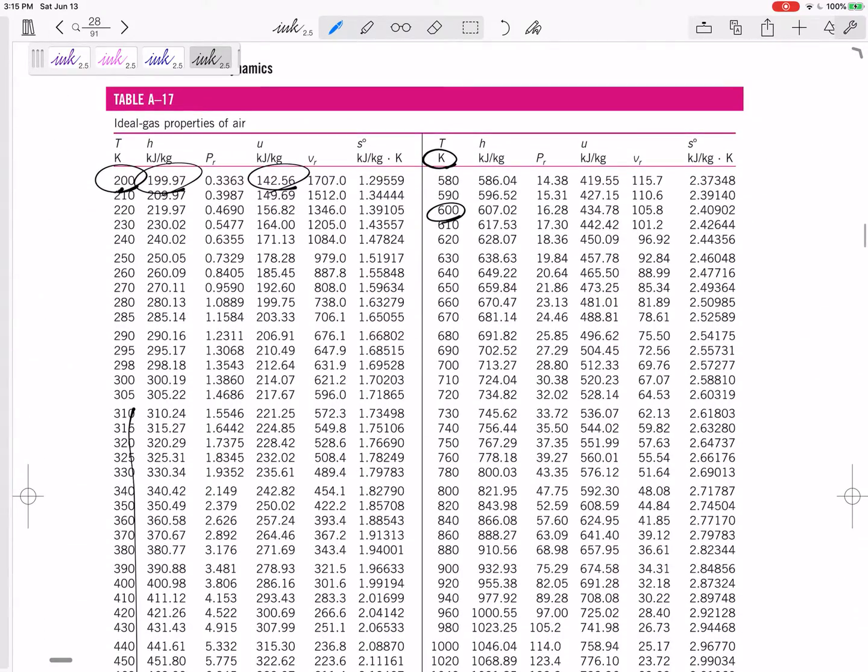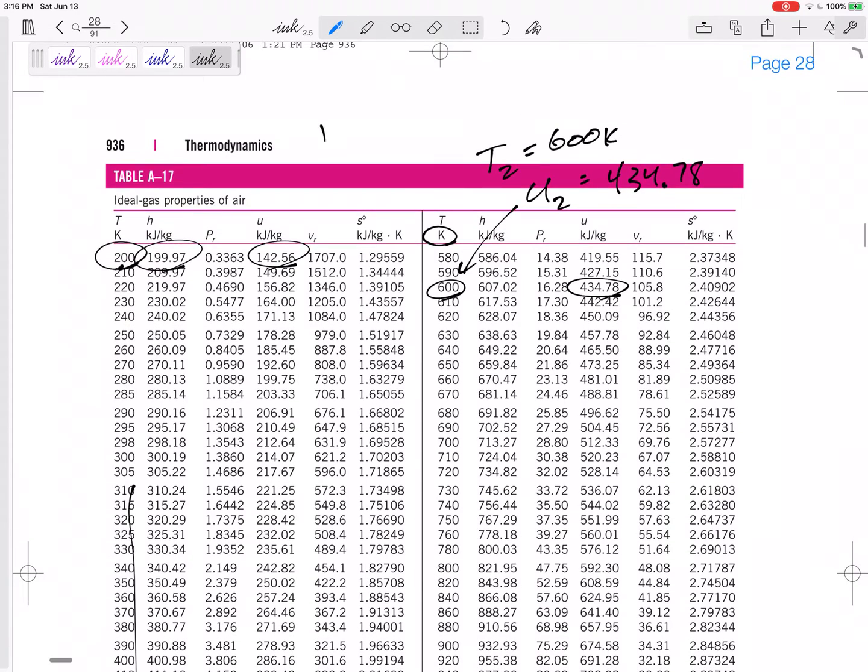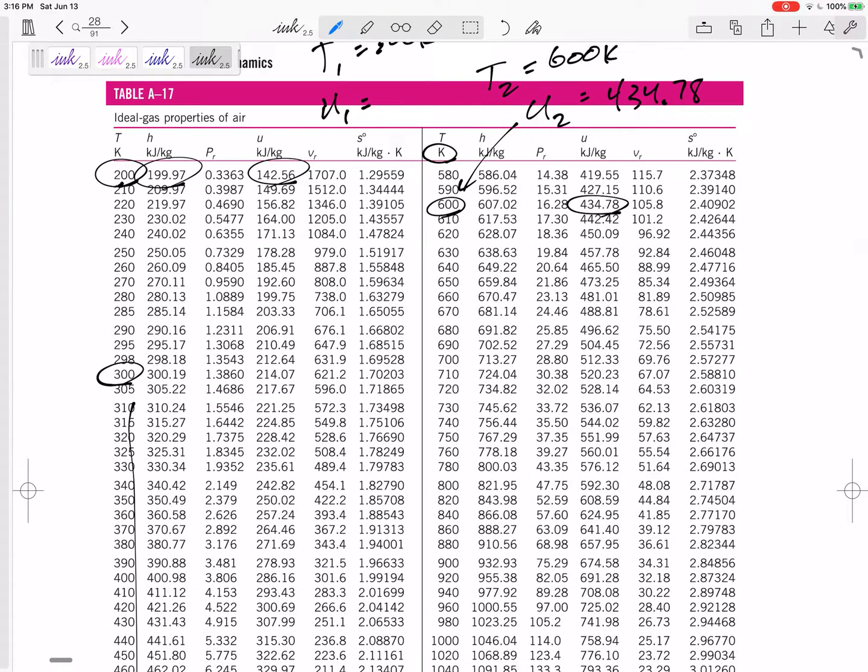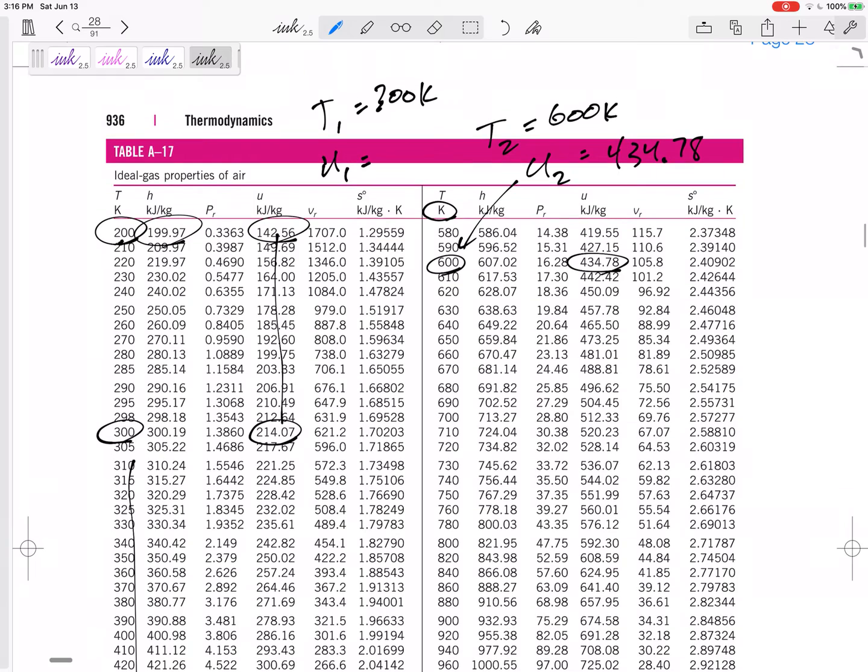Some of the other property tables are in Celsius. What we're looking for, we're looking for H 434.78. Sorry, this was U2, right? T2 600 Kelvin, my U2 is 434.78.